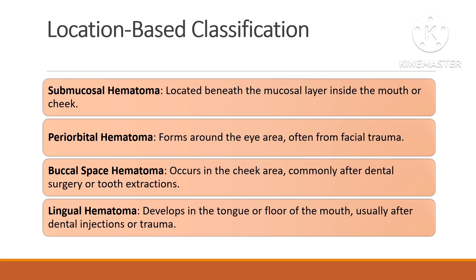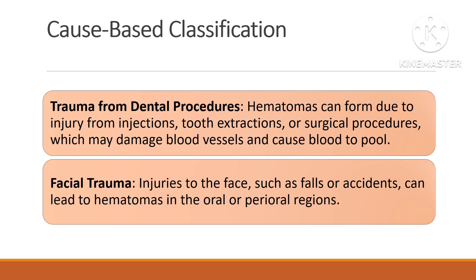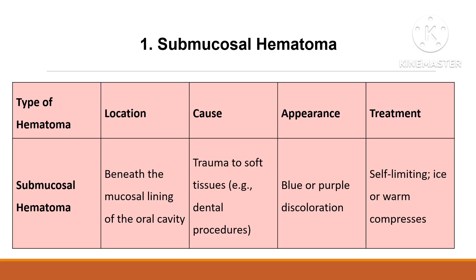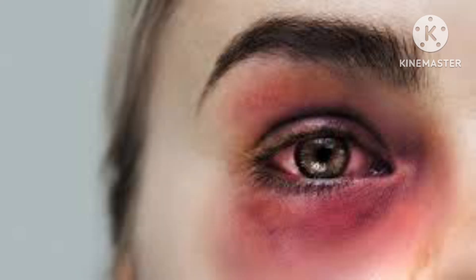Hematomas are broadly classified based on location and cause. By location, a hematoma may be submucosal, forming beneath the mucosal lining of the oral cavity. Periorbital hematoma, also known as black eye, forms around the eye area, often caused by trauma to the facial region.